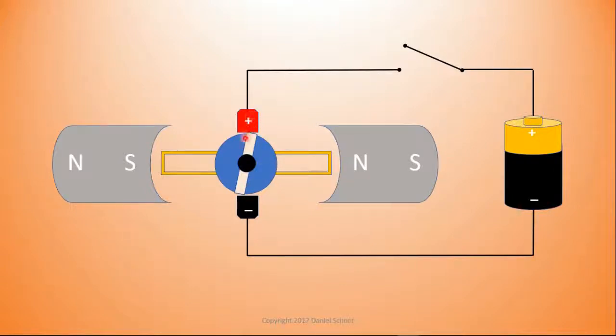We have the positive brush just barely hitting this side of the commutator and the negative hitting the other side. That's going to allow this current to flow through this side and around and around. They're exactly where they need to be to send the electrical currents into the armature as soon as we flip the switch.